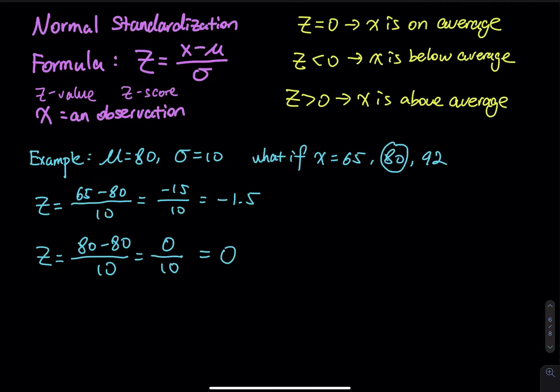0 doesn't mean you got 0 points on the test. 0 means you are exactly on average. And then we have z equals 92. So 92 minus 80 divided by 10. So that is 12 divided by 10. That equals 1.2.